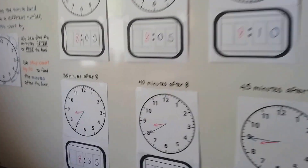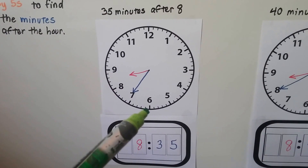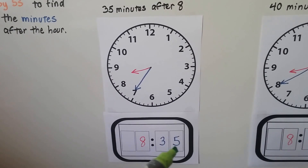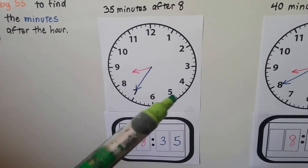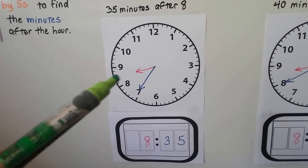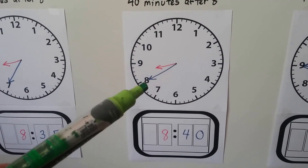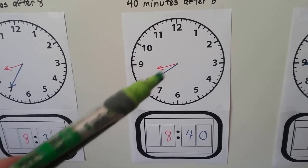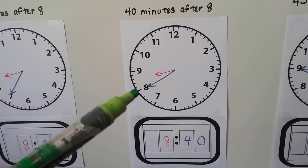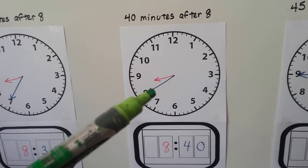When the minute hand is pointing to the seven, it's now 35 minutes after eight — we add another five to the 30. Skip counting by fives: 5, 10, 15, 20, 25, 30, 35. See how the hour hand is in between the eight and the nine. When it's 40 minutes after eight, the minute hand is pointing to the eight — 5, 10, 15, 20, 25, 30, 35, 40 — and the hour hand is starting to get closer and closer to the nine.